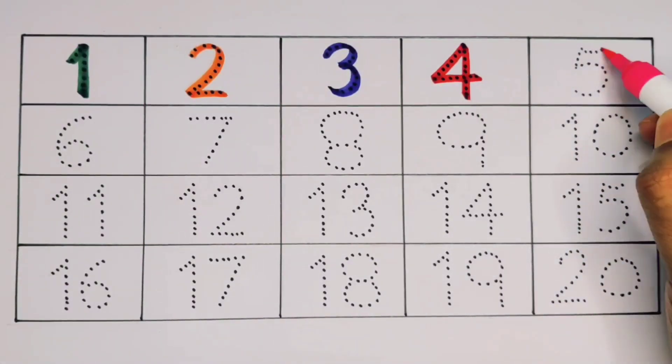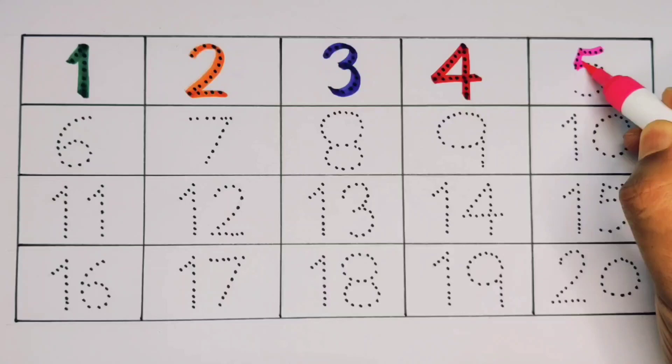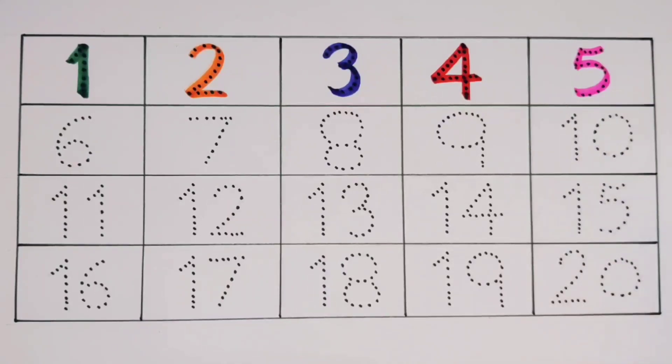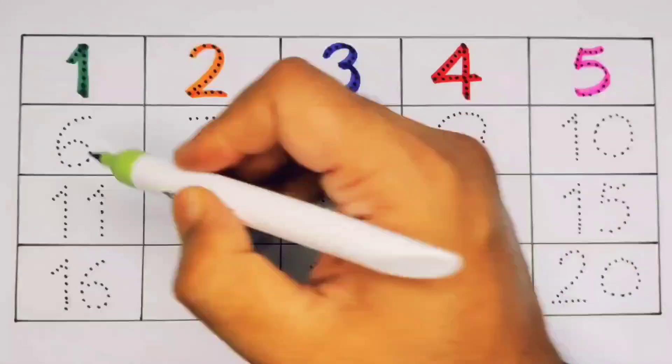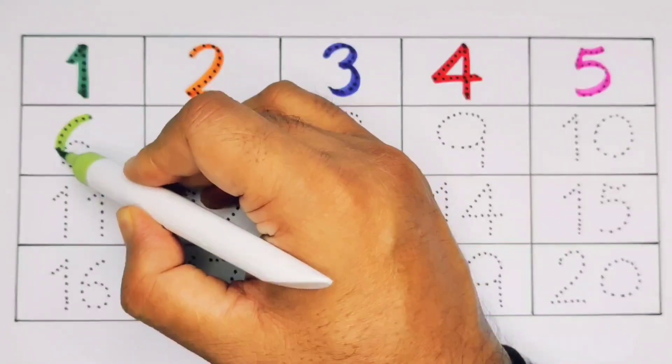What will next kids? It's five, number five. Next kids, it's six, number six.